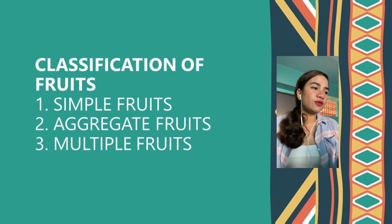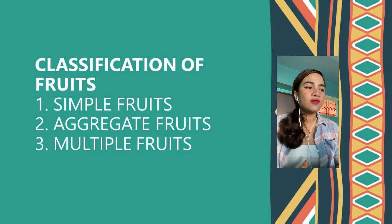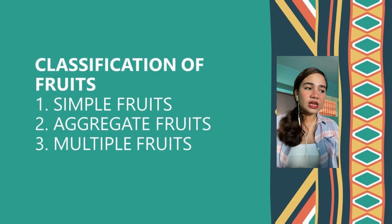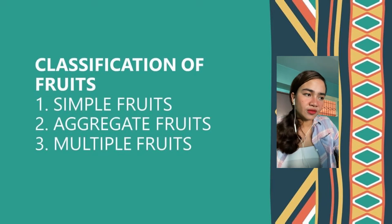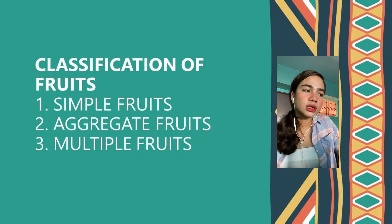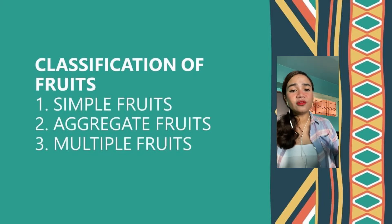The classification of fruits. Fruits are ripened ovaries and adjacent parts of a plant's flower, and they are classified according to the type of flower from which they develop — simple, aggregate, or multiple. First, we have simple fruits, which develop from one flower and include drupes, oranges, grapefruits, and lemons.